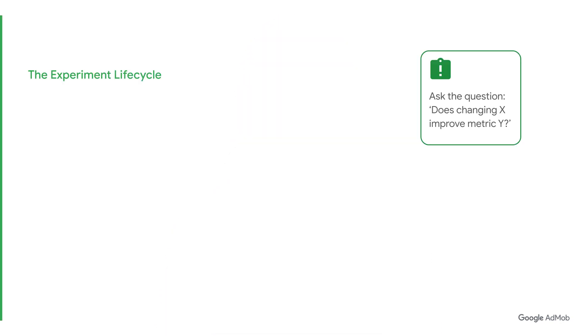Now, let's go a little more in-depth on how to set up an A-B experiment. The essential question that you should be asking here is: does changing X improve metric Y? To answer this question, we recommend going through the experiment lifecycle — a step-by-step process to help ensure that you get to the most accurate X and Y.